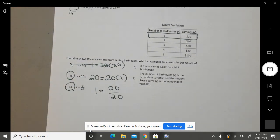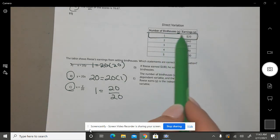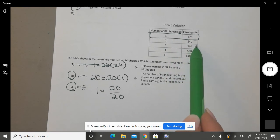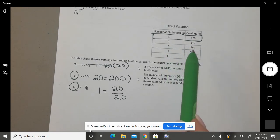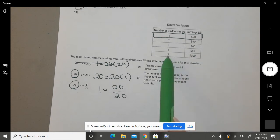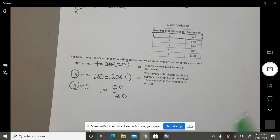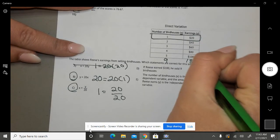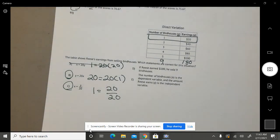All right, D. If Reese earned $180, then he sold nine birdhouses. Is that true or false? True. What are we going up by here? 20. 1 times 20 is 20, 2 times 20... 5 times 20 is 100. If I sell nine birdhouses, do I get $180? It's 9 times 20, $180. Yes.